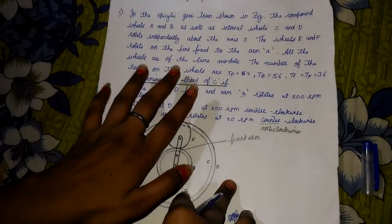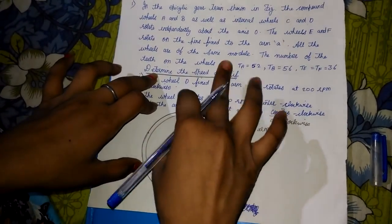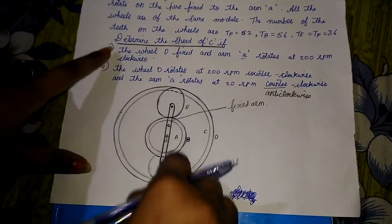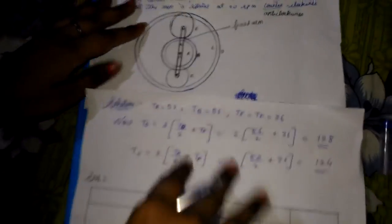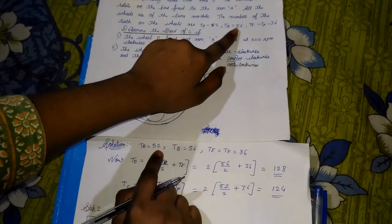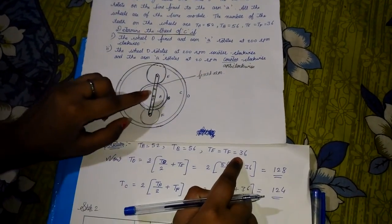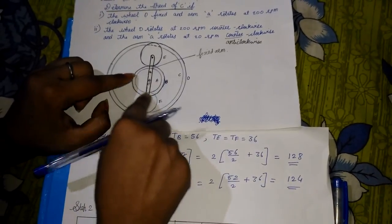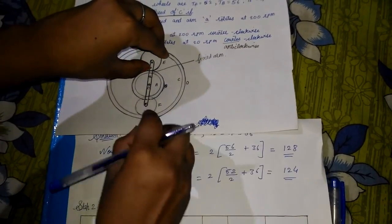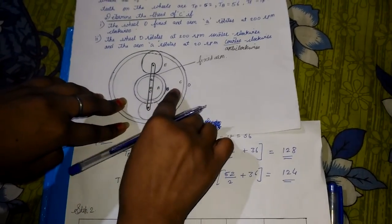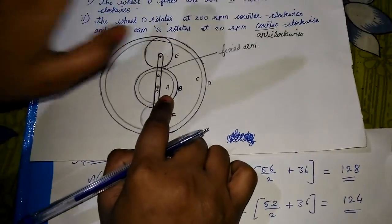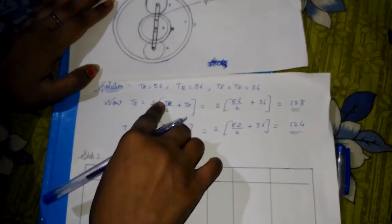We also need to find the speed under two conditions, which we will solve later. Let us first concentrate on the solution. From the given data: teeth of A is 52, teeth of B is 56, and teeth of E and F are 36. Gears A, B, C, and D are not fixed to the pin — they rotate independently. Gears E and F are fixed to the pin.